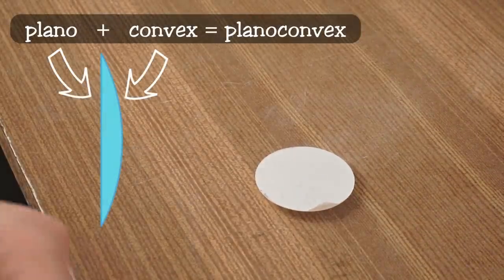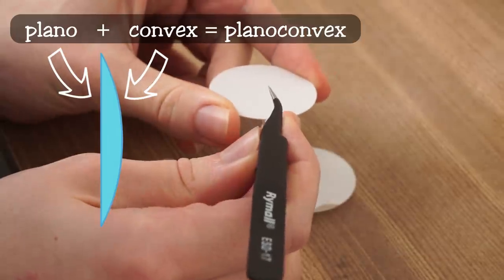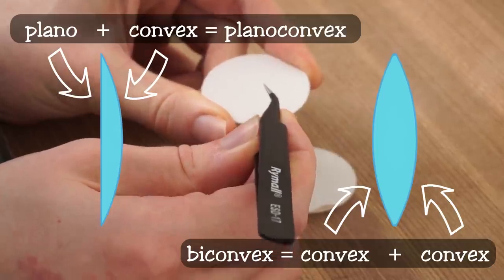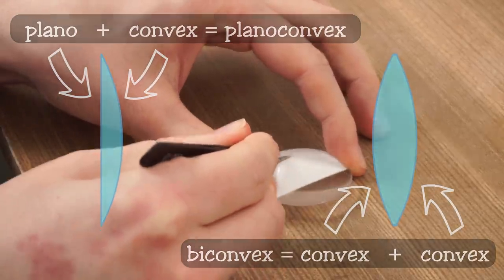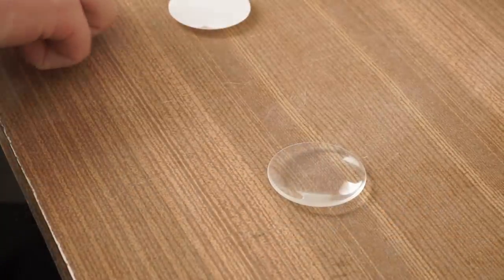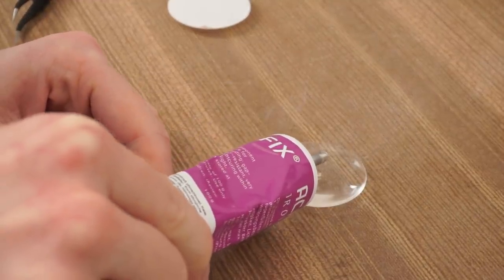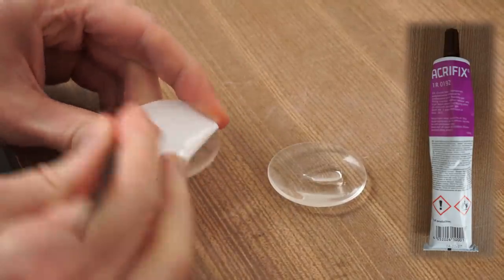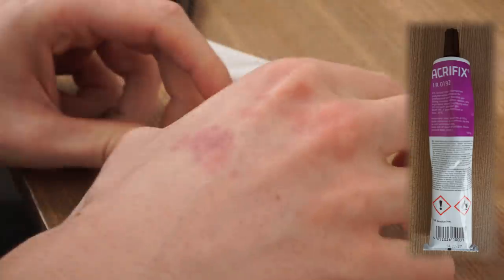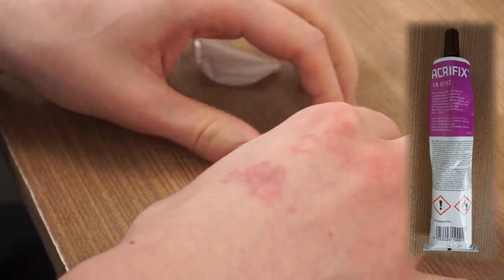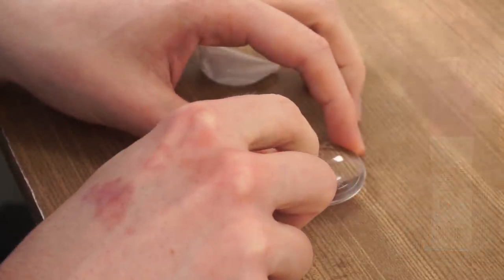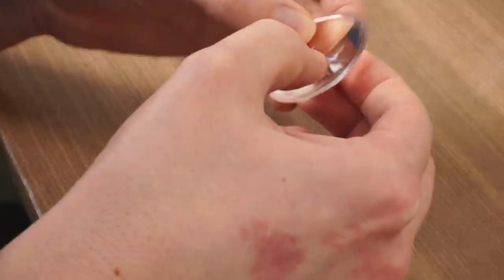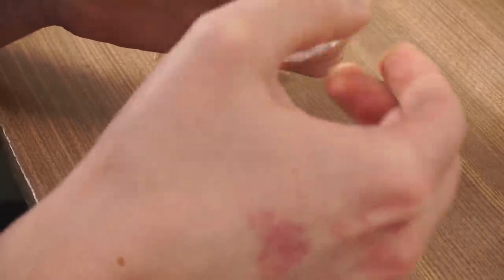So far I have only made so called plano convex lenses. These are flat on one side and have a curvature on the other side. However, I also want to be able to make bi-convex lenses which have a curvature on both sides. So I am using some special glue to combine two plano convex lenses.